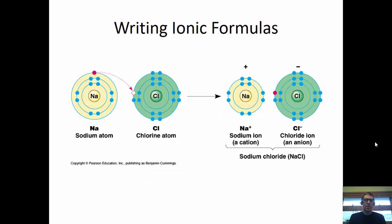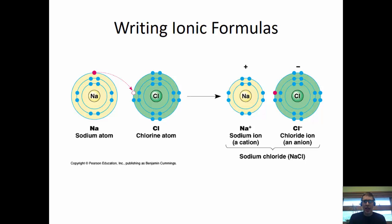To get a cation you donate electrons. Sodium is unhappy because it can see the eight valence electrons underneath, so it wants to get rid of that one valence electron. Chlorine has seven valence electrons and wants one more to be happy. When this happens you get a positive and a negative ion, which are attracted to each other because opposites attract. Cations are positive, anions are negative, and they attract each other to become neutral.